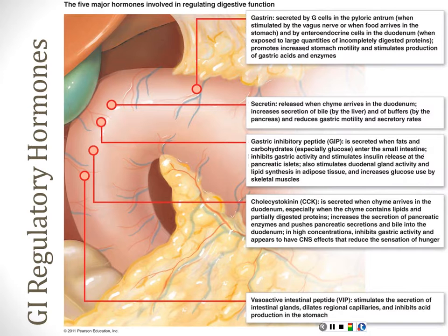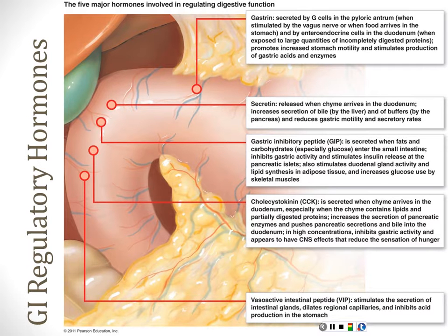Now let's put some of these things in motion — how do these different regions interact? You have five hormones to learn in this chapter, and all five are need-to-know. Gastrin comes from the G cells in the stomach and also from the duodenum — it's a gastric stimulator. Gastrin turns the stomach up: it increases gastric motility, acid production, mucus production, and pepsin production.